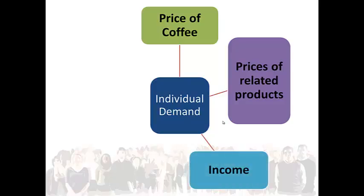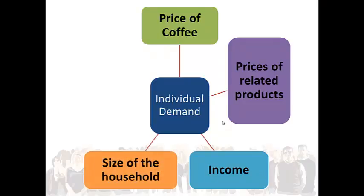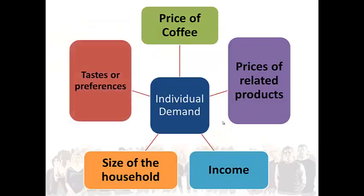Also, one's income — Sally's decision will be influenced by her income. The higher her income, the more coffee she will be able to afford. And the size of the household: if Sally lives alone, she will buy less coffee than if she was living with someone who also enjoys consuming coffee. As well as Sally's tastes and preferences — the more Sally enjoys coffee, the more she will consume and hence buy. However, Sally may not like coffee and only purchase it for her visitors; she will then consume less coffee.